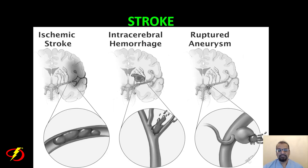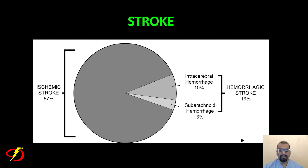Here is a pictorial representation from the book. An occluded blood vessel represents an ischemic stroke. Bleeding within the brain is called intracerebral hemorrhage, a form of hemorrhagic stroke. Bleeding within the subarachnoid space from a ruptured aneurysm is subarachnoid hemorrhage, also a form of hemorrhagic stroke. To summarize: ischemic stroke accounts for 87%, hemorrhagic accounts for 13%, with 10% intracerebral hemorrhage and 3% subarachnoid hemorrhage.